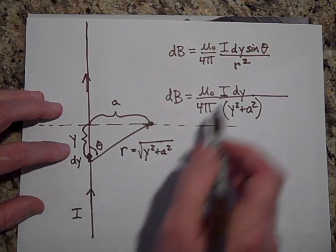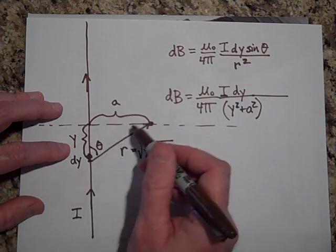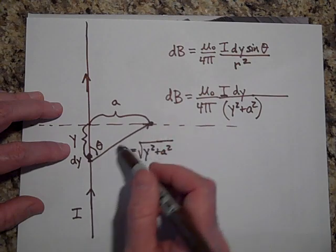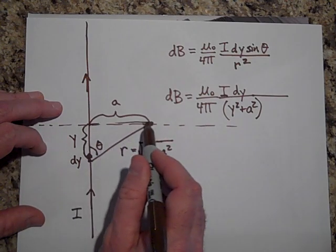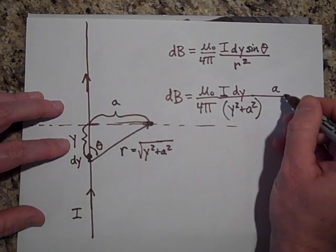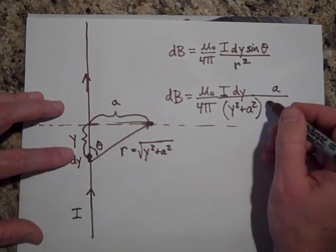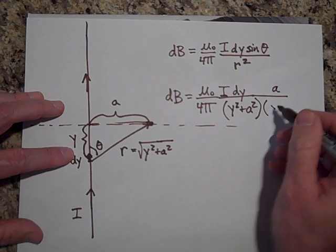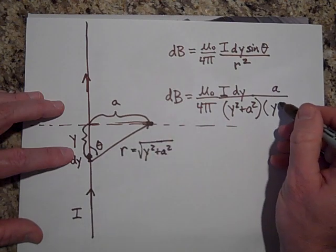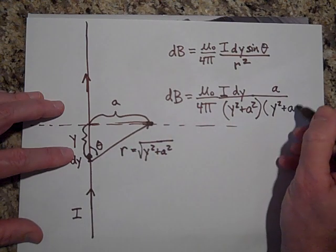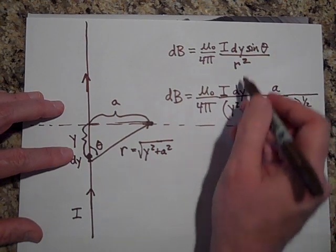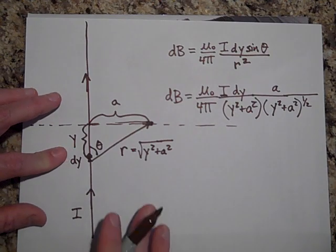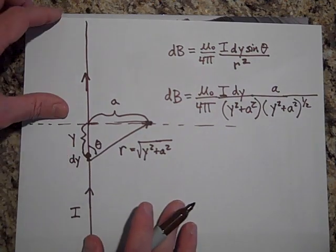And the theta, the sine of theta is the opposite side over the hypotenuse. So sine of theta is the opposite side, A, over the hypotenuse. And the hypotenuse is R again. So it's going to be square root of Y squared plus A squared. This time I have to square root it. There's no square root here because remember we square that R.